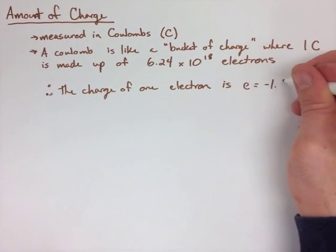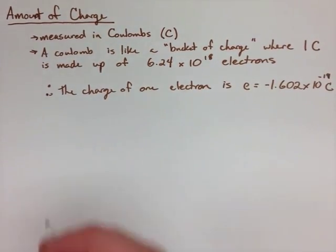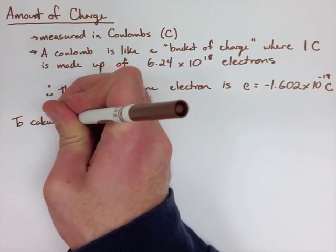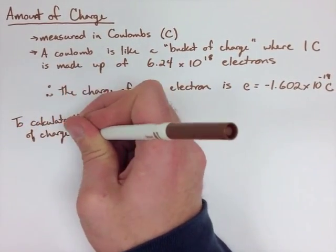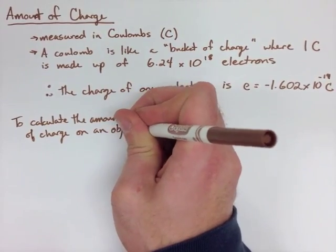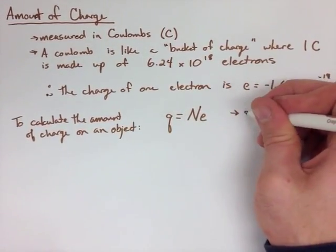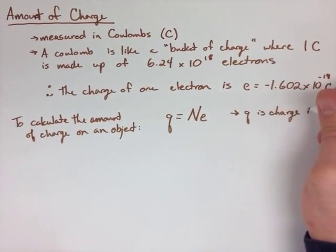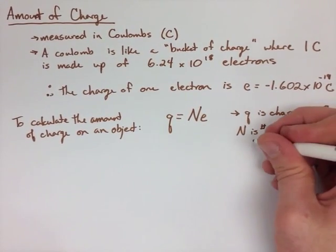The next thing we're going to look at is how to calculate the amount of charge in an object. It's a very simple calculation, where we have Q, or the charge in Coulombs, is equal to N times E. N is the number of electrons, that's either surplus or deficit if it's a negative, times the charge of the electrons.